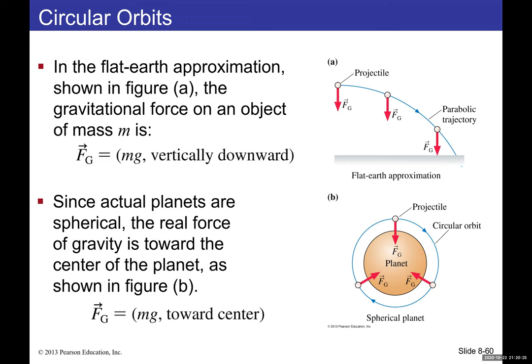The flat-Earth approximation is valid only when height h is very small compared to Earth's radius. For orbits, h is comparable to Earth's radius, and gravity points toward Earth's center, not simply downward.